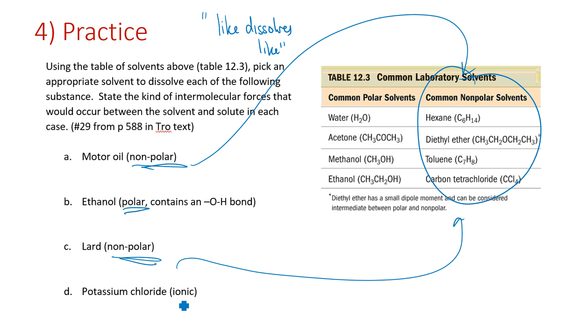Non-polar substances will dissolve well in non-polar solvents. Your polar and ionic ones are going to dissolve well in your polar solvents right here. So that's kind of the main takeaway behind this question. For example, water would be a good one for B and D, and hexane would be a good one for A and C. You could also choose something else from the list.